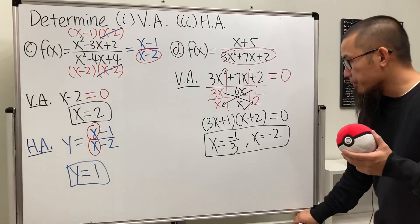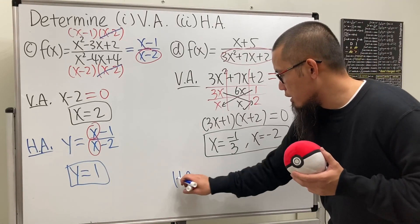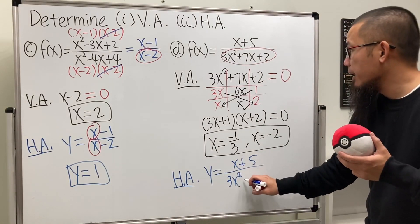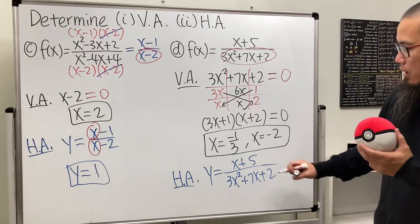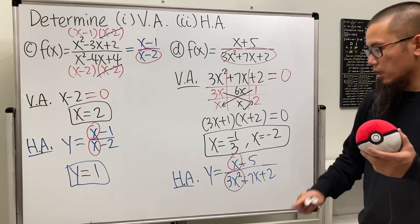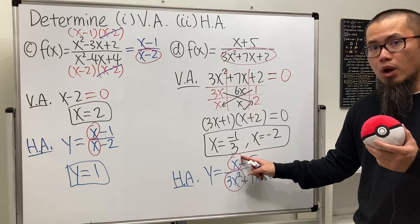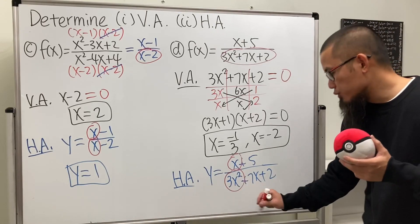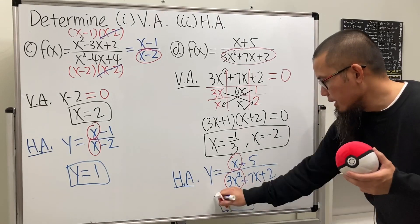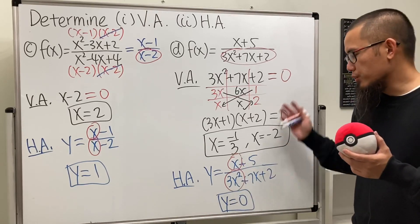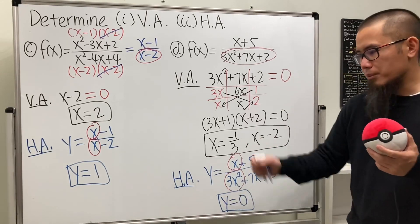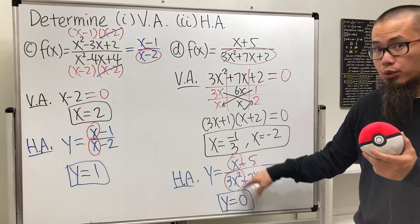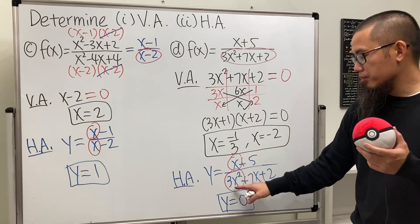For the horizontal asymptote of part (d), y = (x + 5)/(3x² + 7x + 2). The highest power on top is x (degree 1) and on the bottom is 3x² (degree 2). The answer is not 1/3 because after canceling one x, there's still an x on the bottom. So you get 1 over a huge number as x → ±∞, meaning the horizontal asymptote is y = 0.